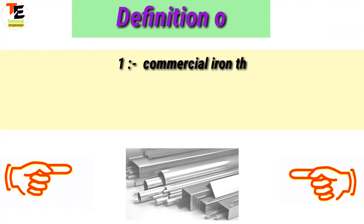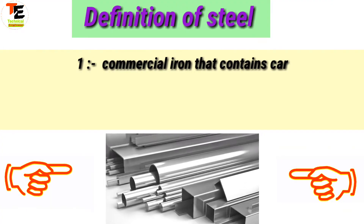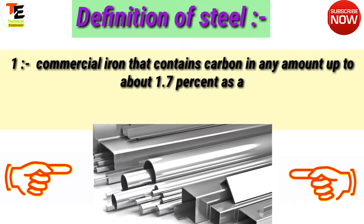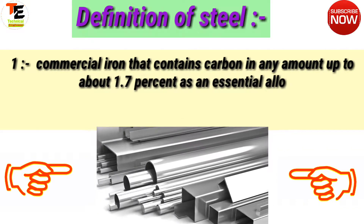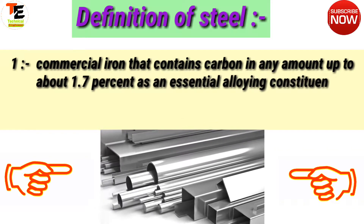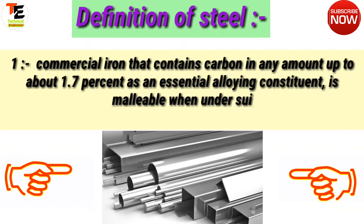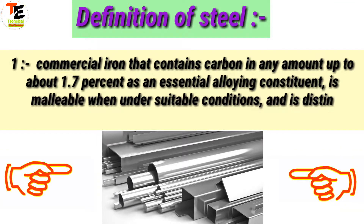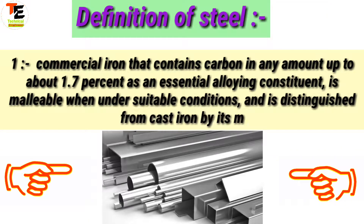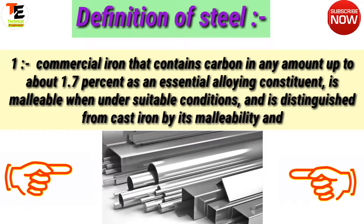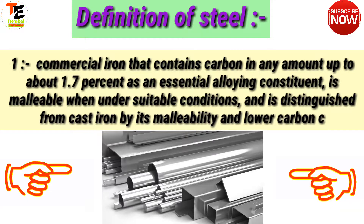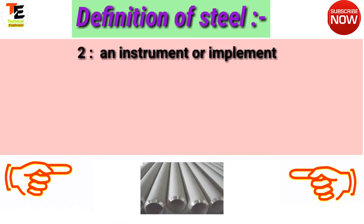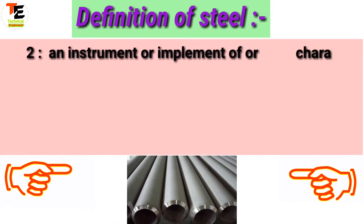A commercial iron that contains carbon in any amount up to about 1.7% as an essential alloy constituent, is malleable when under suitable conditions, and is distinguished from cast iron by its malleability and lower carbon content.